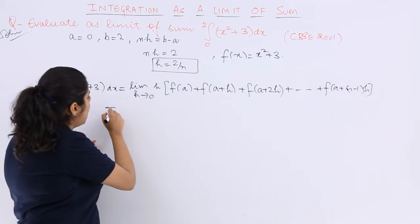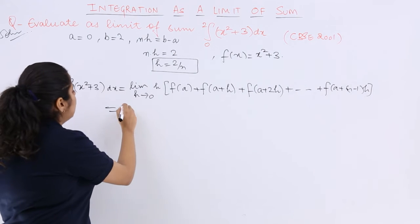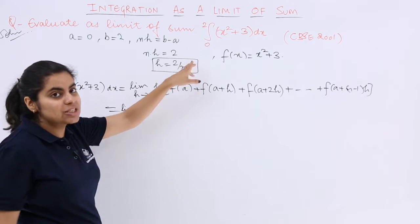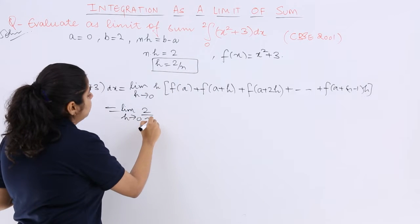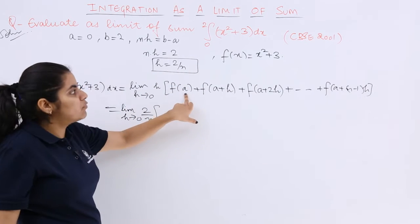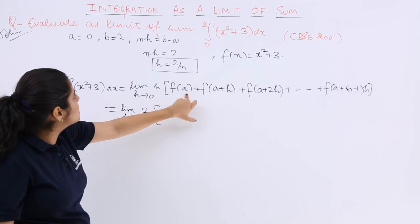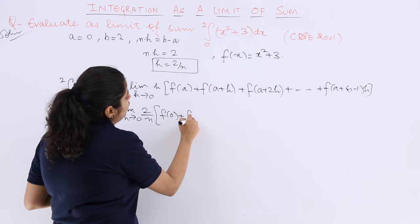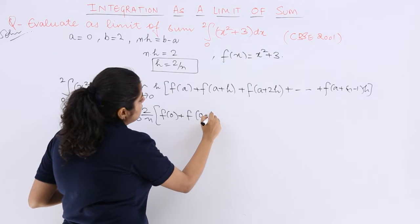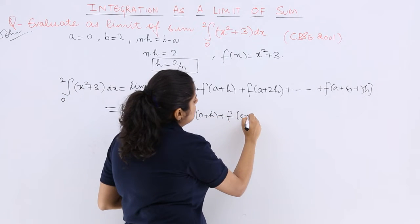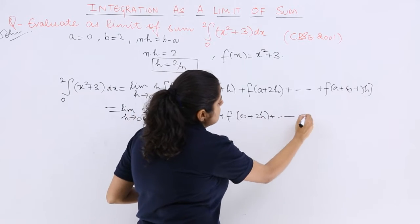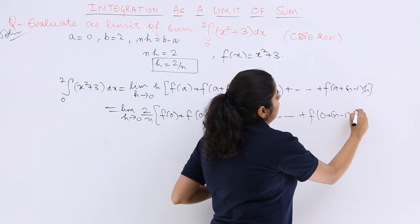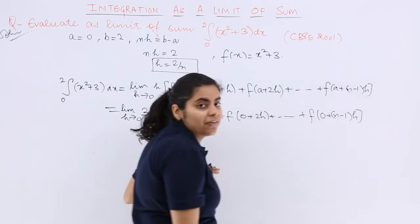Now you see how to do it further? Very simple. I know that limit H tends to 0. What is the value of H? It is 2 upon N. And F of A: A is the lower limit which is 0. So F of 0, F of A plus H is F of 0 plus H, plus F of 0 plus 2H and so on till F of 0 plus N minus 1 into H.